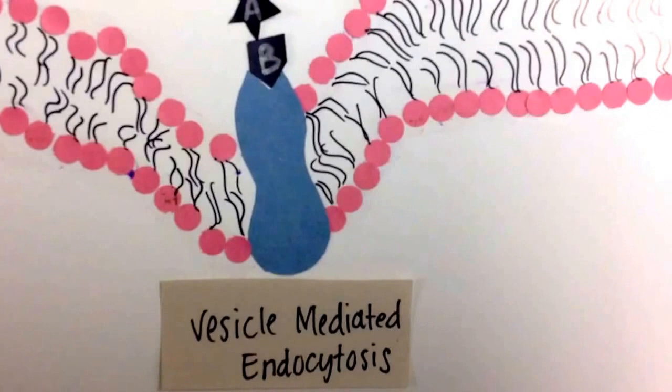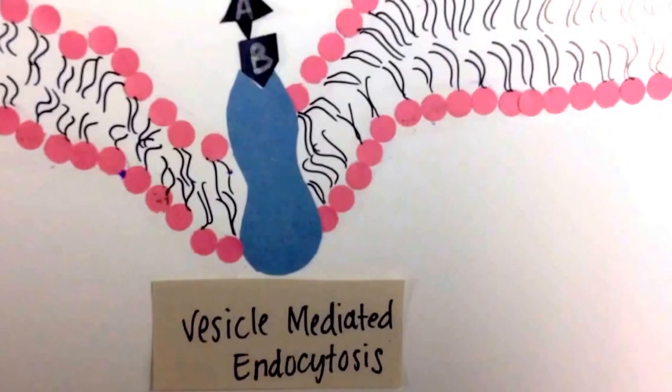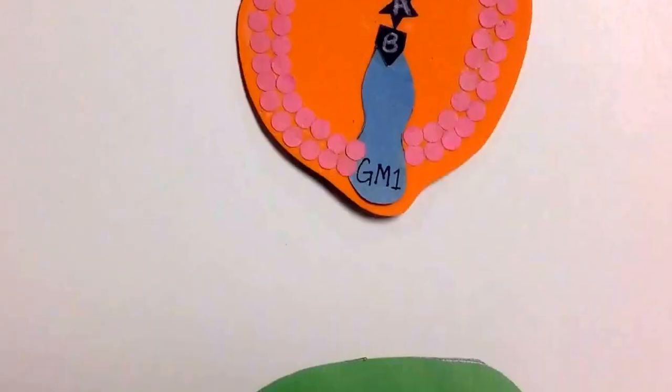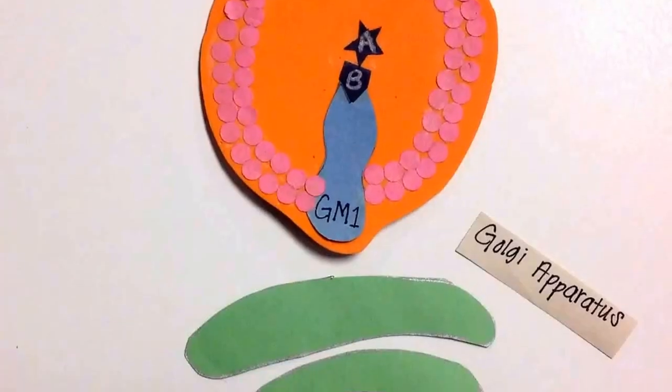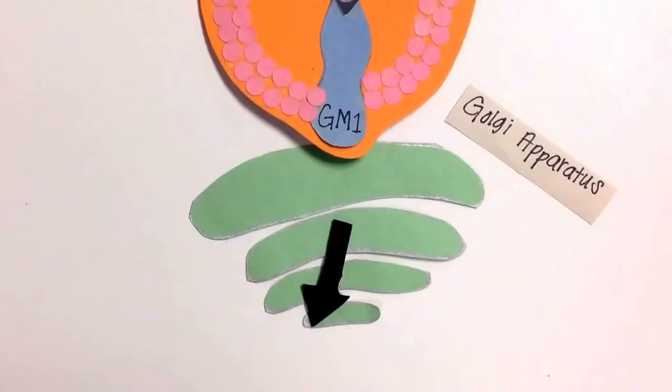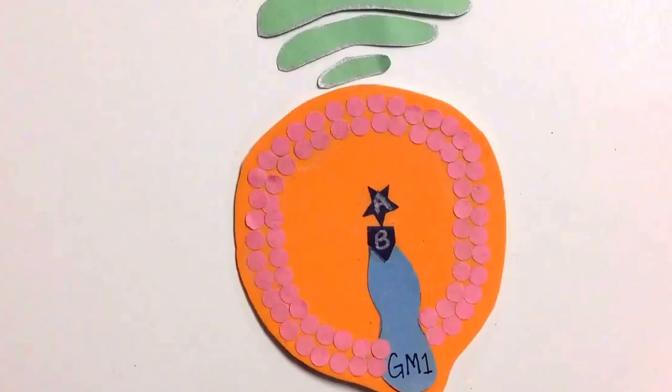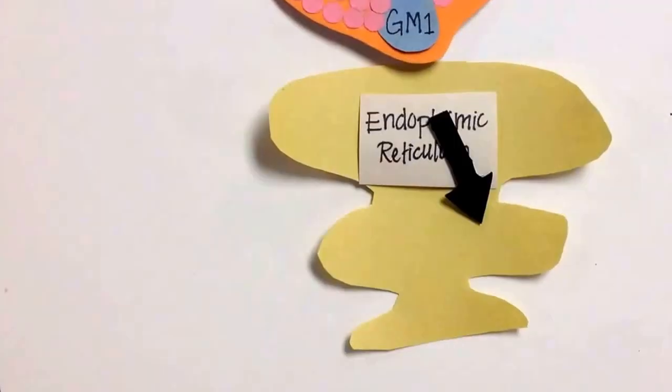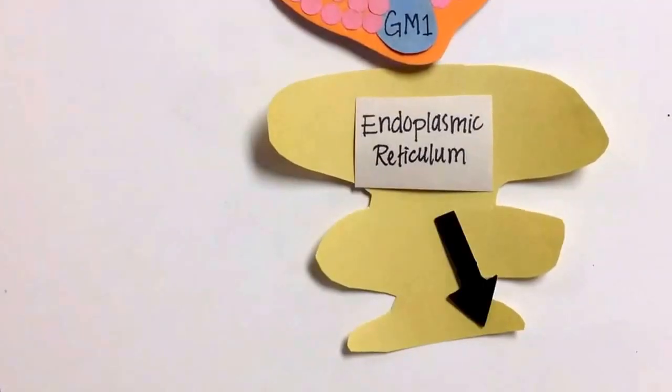Once bound to the GM1 receptor, the AB toxin is endocytosed within clathrin-coated pits. Once the vesicle is formed, it proceeds through the Golgi apparatus onto the ER, where the pH drops which causes the A and B subunits to separate.